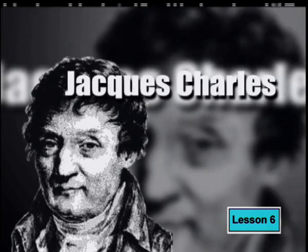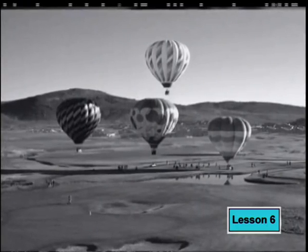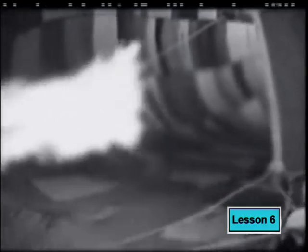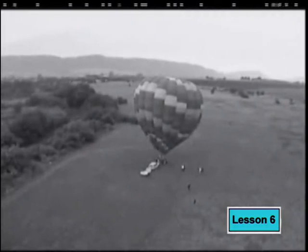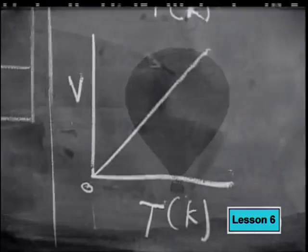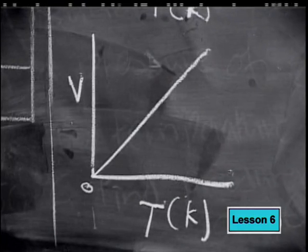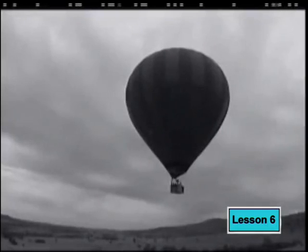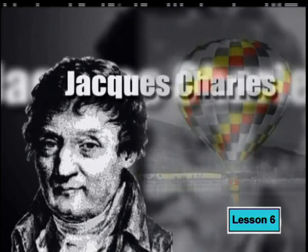Hello, Grade 11s, and welcome to this lesson on Charles' Law. Let's start with some history. Jacques Charles was a French physicist and pioneer balloonist. He proposed that hot air balloons rise into the air because the volume that a fixed mass of gas occupies at atmospheric pressure increases with increasing temperature, making the gas less dense. In 1787, he did experiments to show a simple mathematical relationship between the volume of gases and their temperatures, which helped him calculate exactly how much he needed to heat the gas in his hot air balloon to stay up in the air.